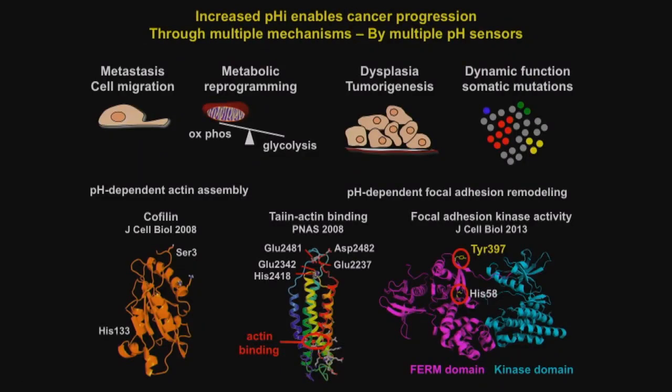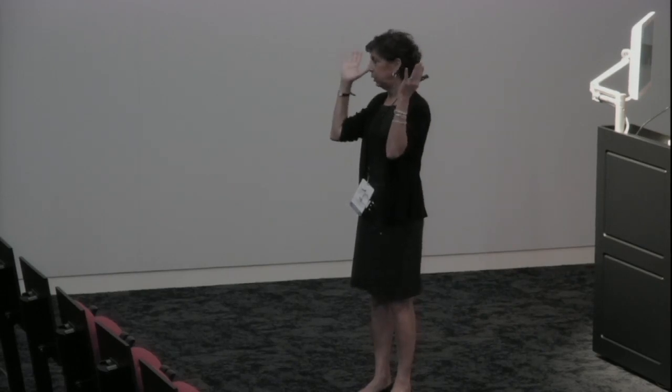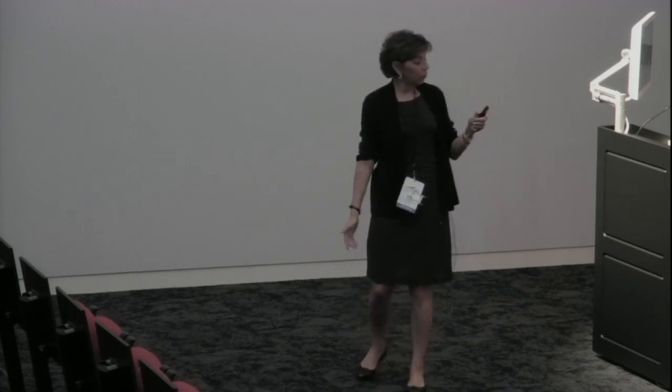I want to tell two brief stories that convey how we approach this problem and relate it to cancer — and can be carried over to neurodegeneration. The first is on dysplasia. It had been known that oncogenes increase pH: RAS V12 makes intracellular pH go very high. So we wanted to show this in live animals, and generated Drosophila models expressing a pH biosensor — a genetically encoded sensor called Florin, a variant of GFP.